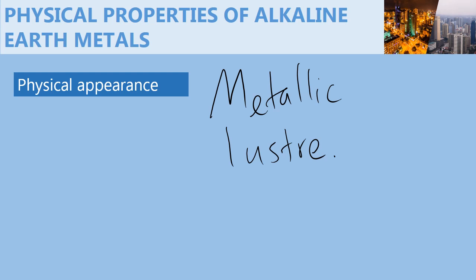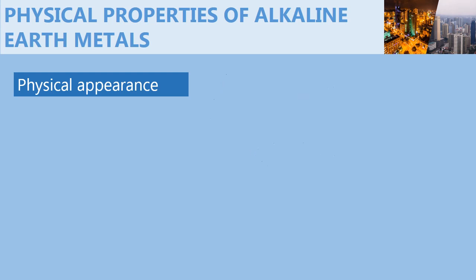Just like alkali metals, alkaline earth metals react with oxygen in air to form a metal oxide. The metal oxide forms a thin layer on top of the alkaline earth metal, and that is why before an experiment we have to polish alkaline earth metals to remove the thin oxide layer.